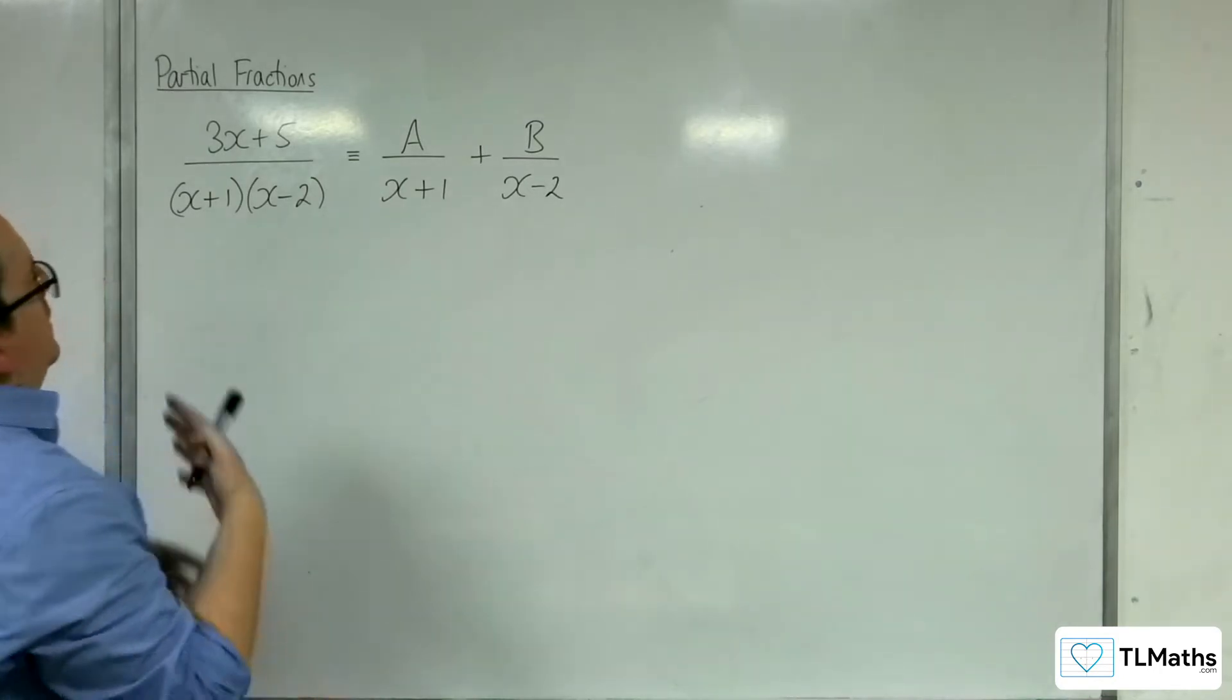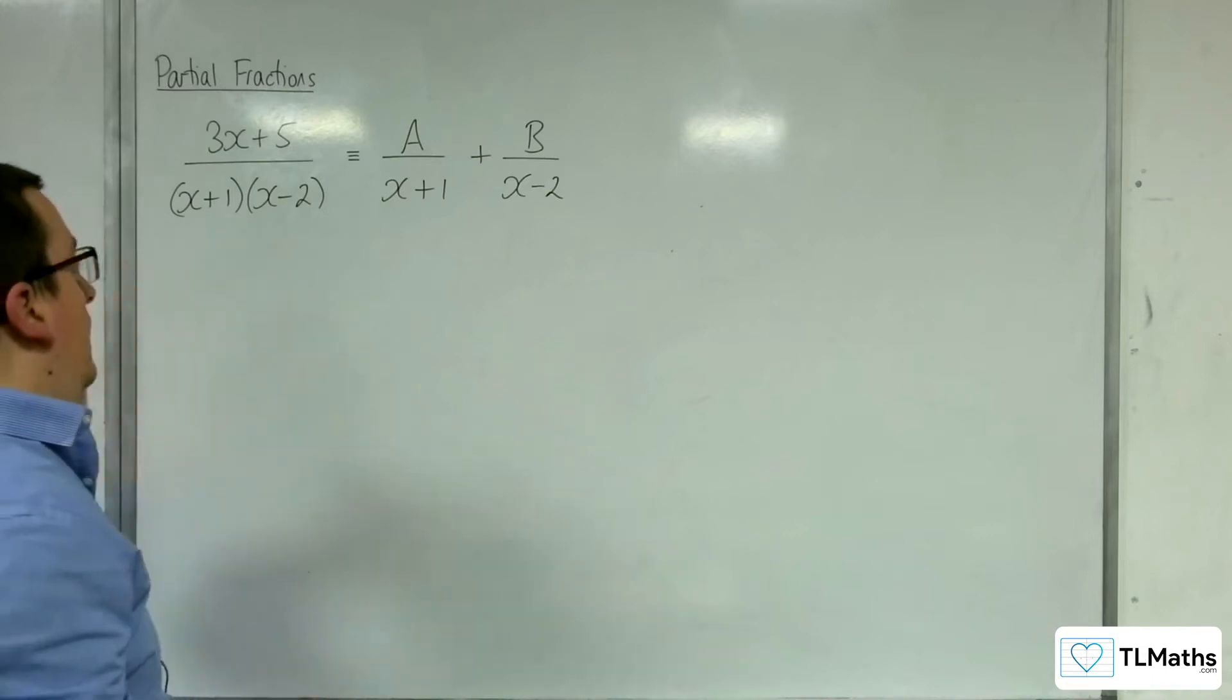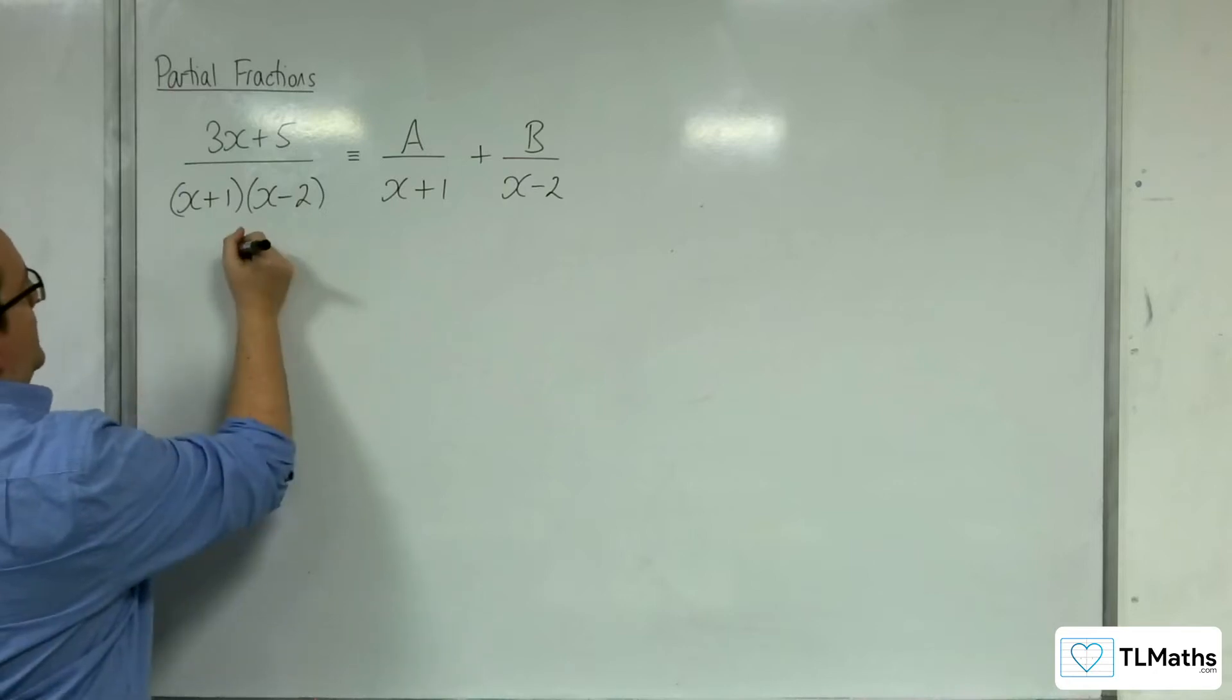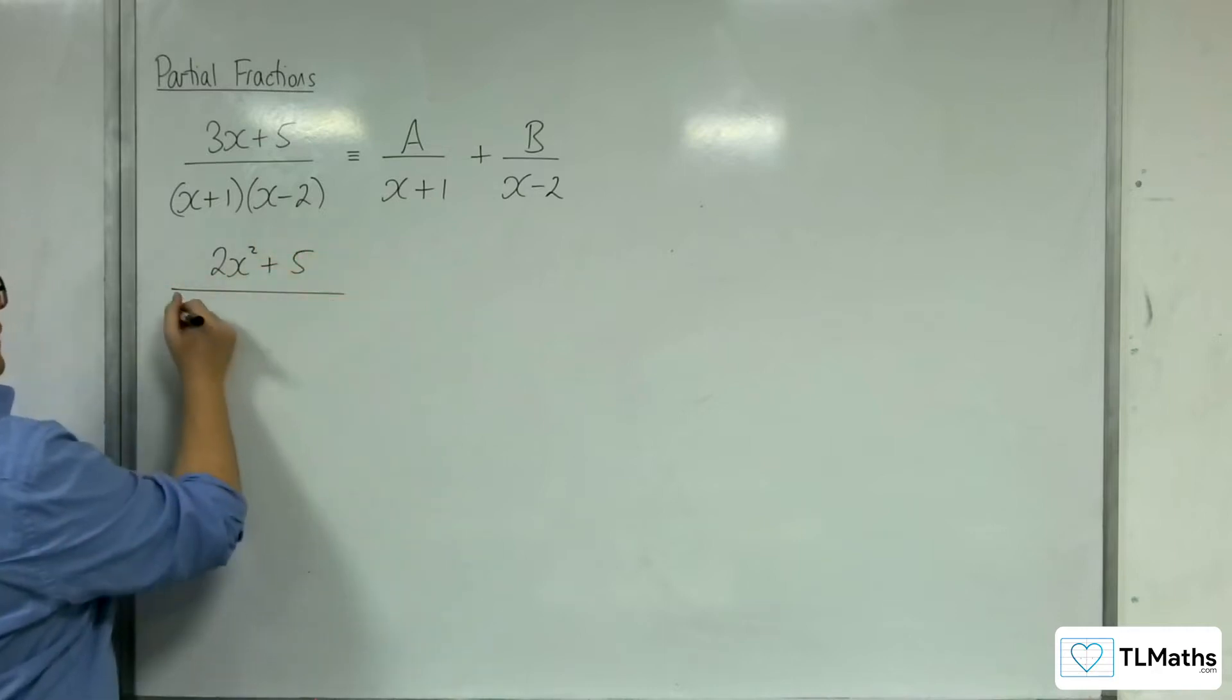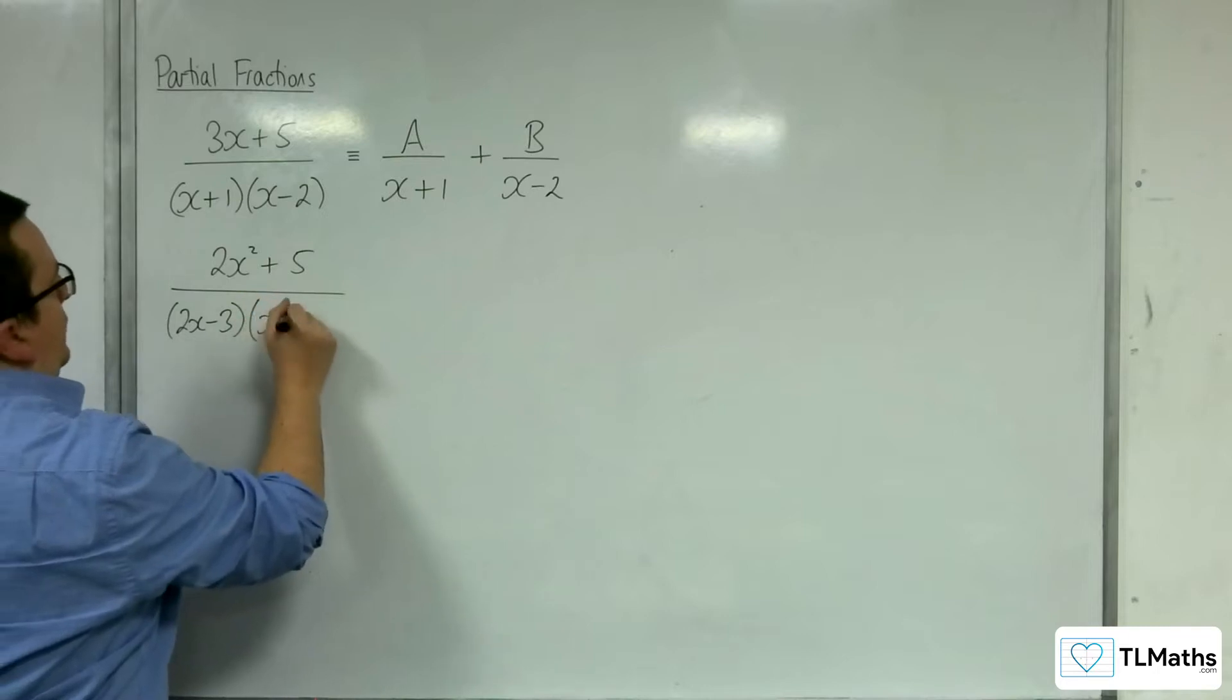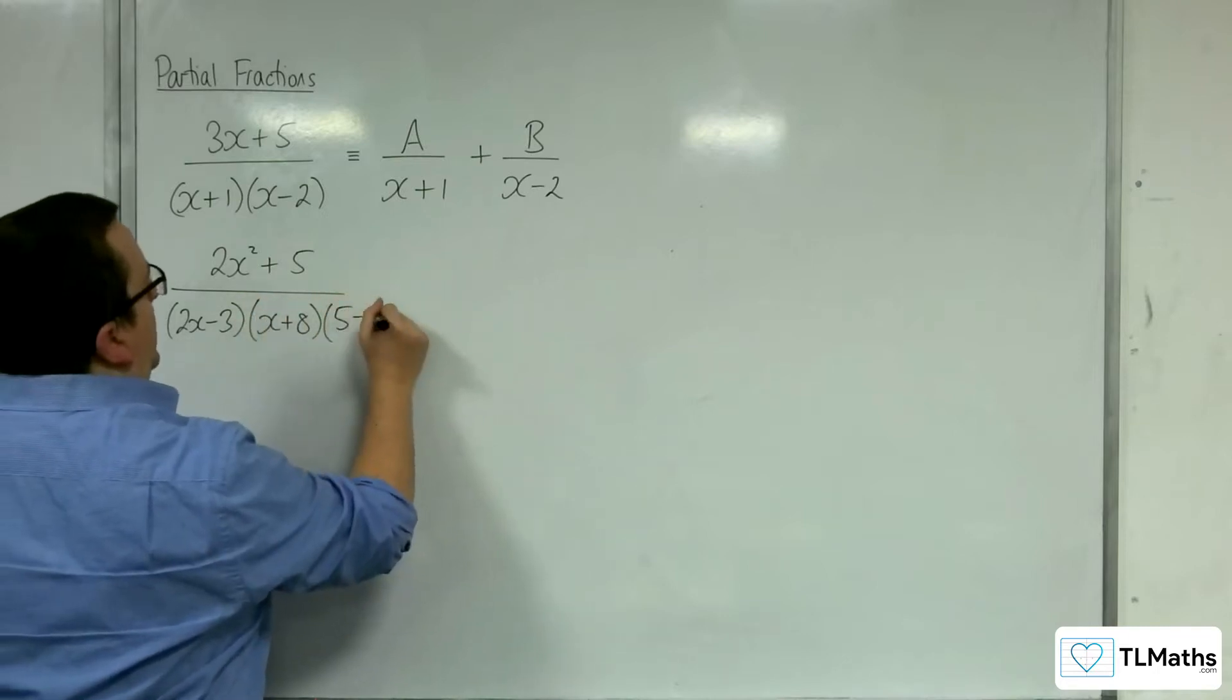So that's the most basic form. I would also expect you to be able to extend that to three linear terms in the denominator, something like 2x²+5 over (2x-3)(x+8)(5-x), for example.